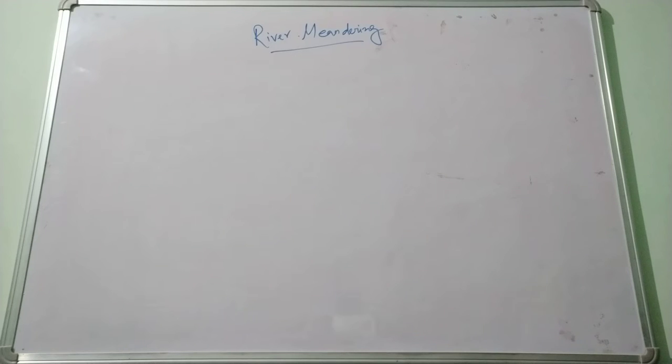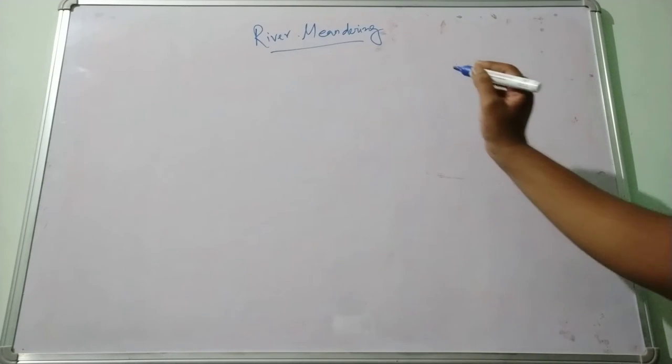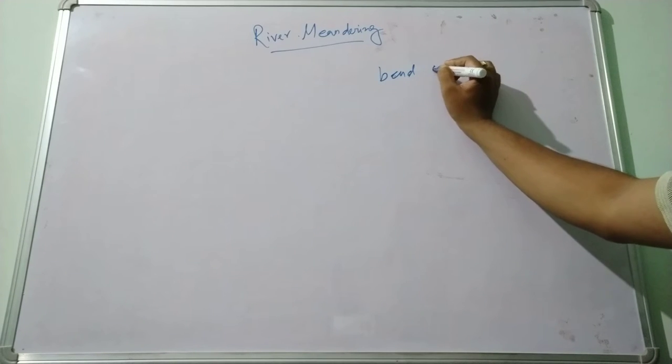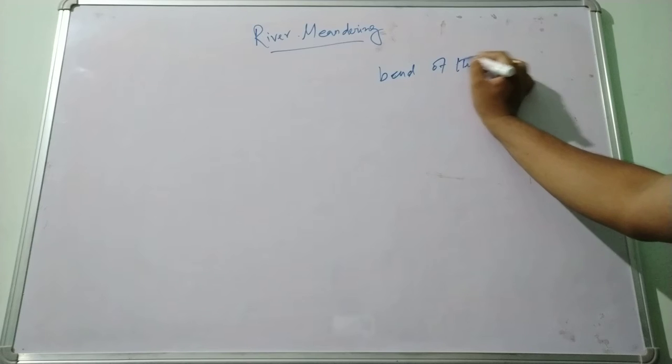Good morning, today we are going to discuss river meandering, which is one of the important landforms found in the fluvial process. River meandering can be developed due to the erosion or deposition work at the middle course of the river. River meandering refers to the bent of the longitudinal course of the river.